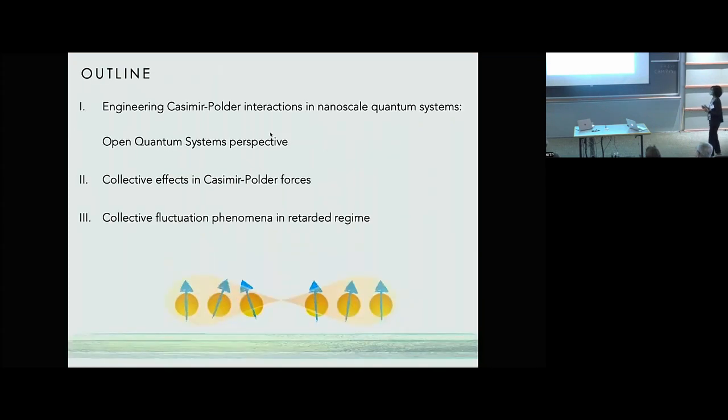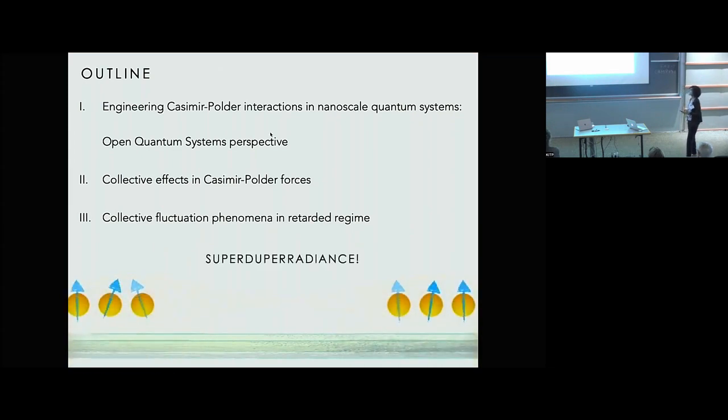All right, so here is an outline of what is to come. I'll start with some background and motivation from an open quantum systems perspective, and tell you about collective effects in Casimir-Polder forces. And at the end, I want to talk briefly about something which is a bit of a stretch from nanoscales, literally, where we consider this problem of collective fluctuation phenomena between emitters that are at very, very long distances. And what we find there, that collective spontaneous emission can be enhanced beyond regular super radiance. And this is an effect that we've been referring to as super duper radiance.